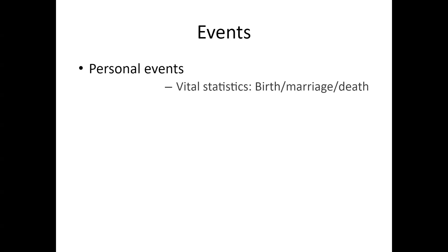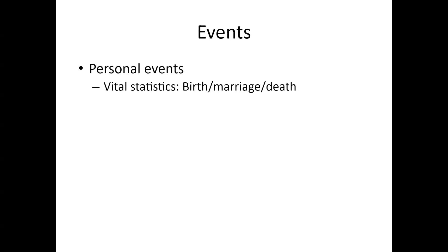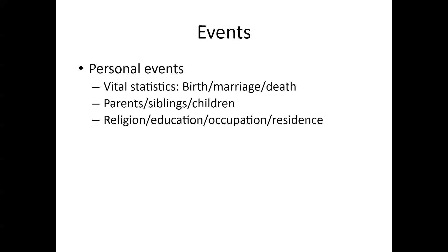What are events? Clearly there are personal events. The number one is vital statistics: birth, marriage, death. Prior to 1900, divorce was rare, but death was more common, so you had widows and widowers who would remarry. Your parents, siblings, and children are all part of your personal events. They may not have an exact date, but they have an associated piece in your event space. Your religion, education, occupation, and residence are also events. I was able to trace my wife's grandmother — who was Polish — right after she came into this country because she had the same occupation in two consecutive censuses, even though the name wasn't spelled the same way. Migration and citizenship — big deal.